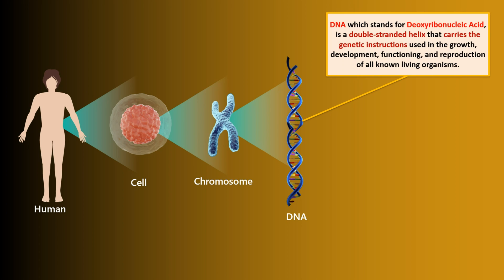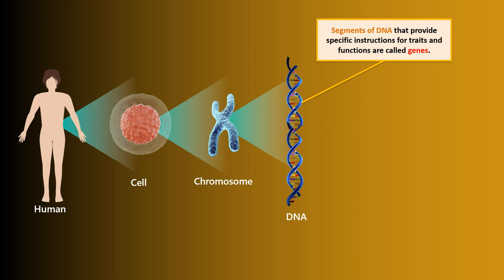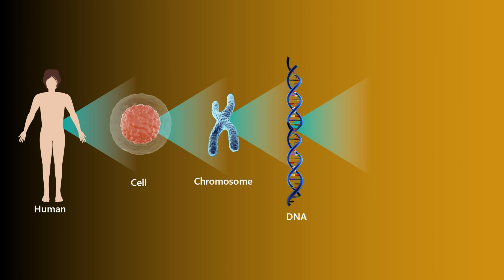DNA, which stands for deoxyribonucleic acid, is a double-stranded helix that carries the genetic instructions used in the growth, development, functioning, and reproduction of all known living organisms. Segments of DNA that provide specific instructions for traits and functions are called genes.